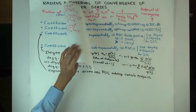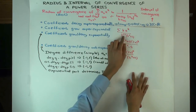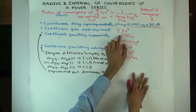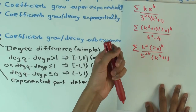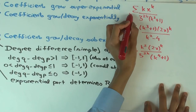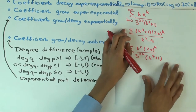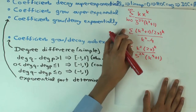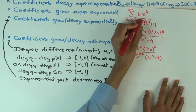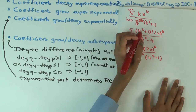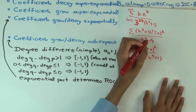Let's do some examples. The first example I'll explain in full detail. The summation goes from 0 to infinity — it doesn't matter as far as determining convergence is concerned. What's the exponential part within the coefficients? What part of the coefficients is exponential in k? The 3^(2k) — and it's in the denominator.